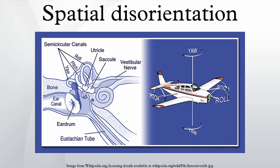Spatial disorientation is a condition in which an aircraft pilot's perception of direction does not agree with reality. While it can be brought on by disturbances or disease within the vestibular system, it is more typically a temporary condition resulting from flight into poor weather conditions with low or no visibility. Under these conditions the pilot may be deprived of an external visual horizon, which is critical to maintaining a correct sense of up and down while flying.